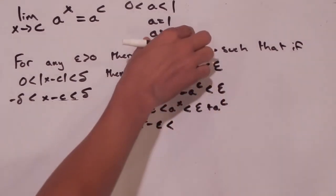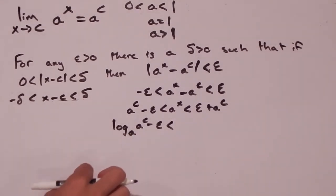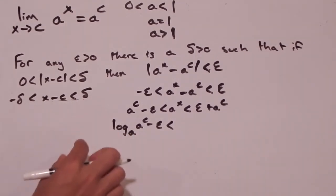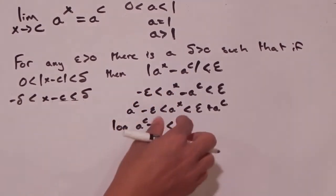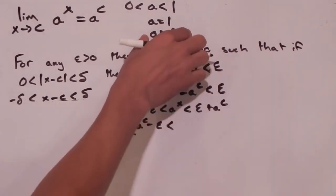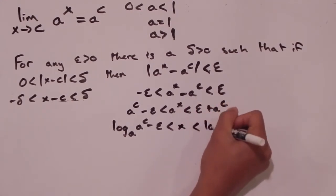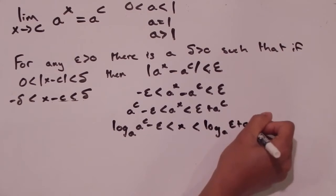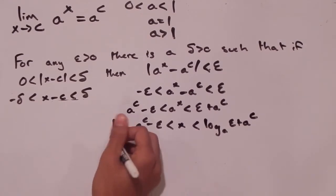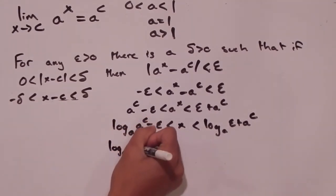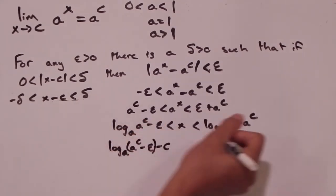One reason we're looking at the case a greater than 1 is that when we take log base a or raise an expression to the power a, and a is smaller than 1, these inequalities tend to flip. By restricting to a greater than 1 we avoid that. Taking log base a gives us: log base a of (a to the c minus epsilon) on the left, x in the middle, and log base a of (epsilon plus a to the c) on the right. Then we subtract c from all sides.